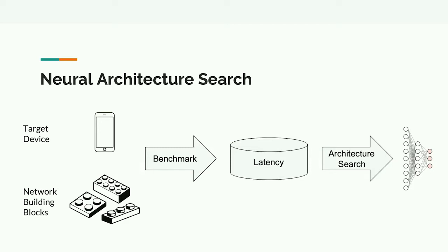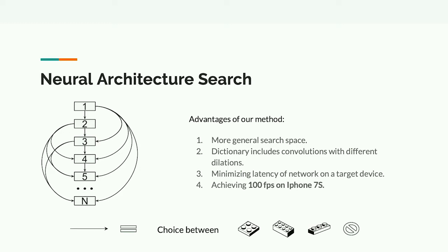To do this in real time, we apply an approach called Neural Architecture Search. It helps us build a network that runs nearly in real time on any device. We take the building blocks our network consists of, benchmark each of them, measure latency in milliseconds, and use this in the Neural Architecture Search algorithm, which tries to choose the optimal path and prune less important ones while achieving the desired latency.